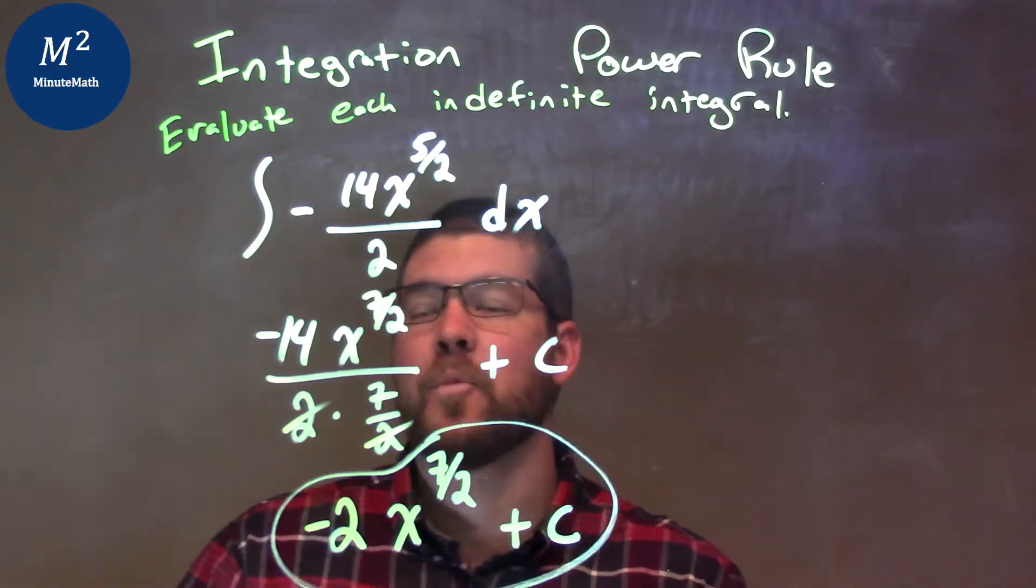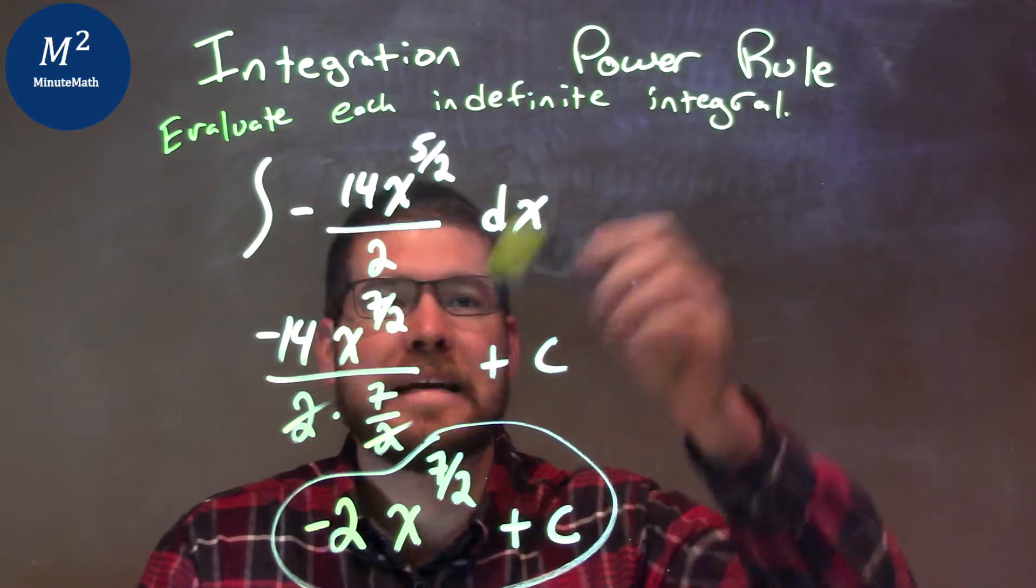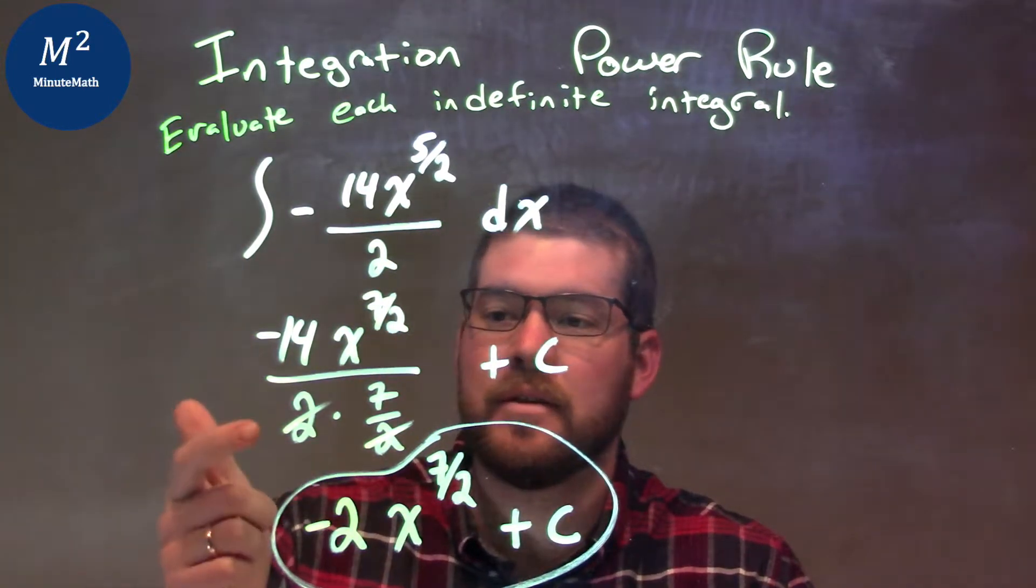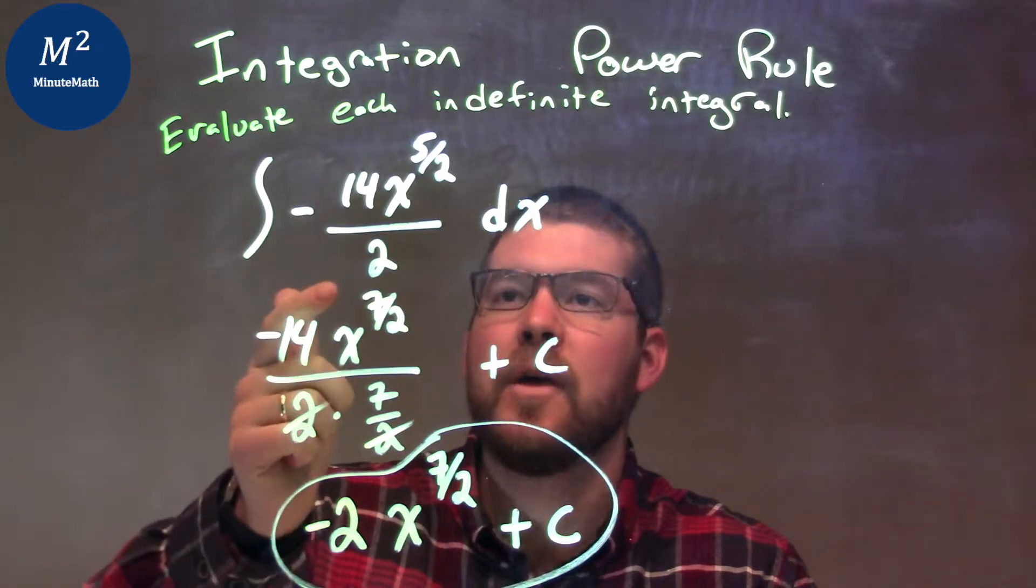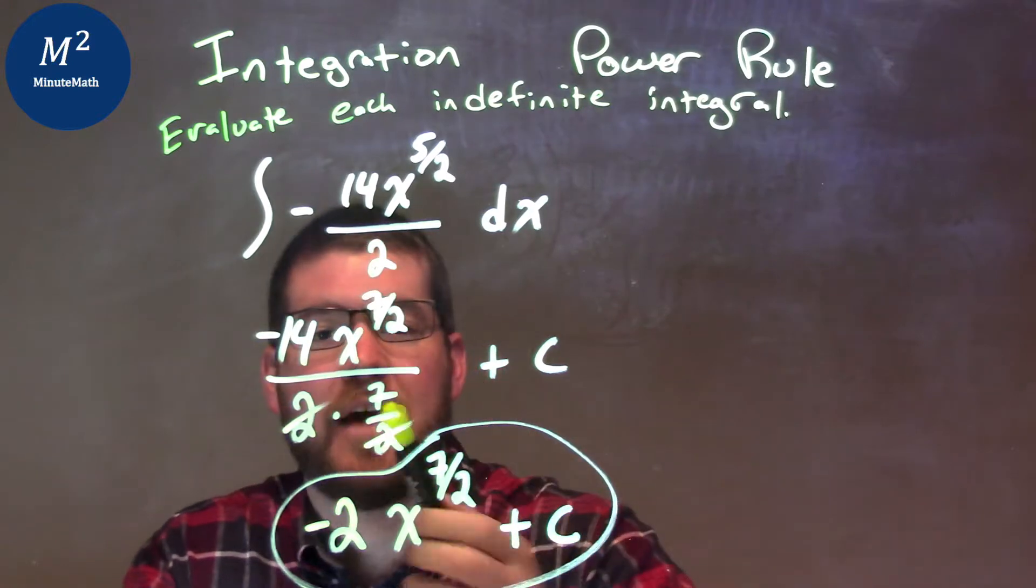So, let's recap. We're given the integral of negative 14x to the 5 halves power divided by 2 dx. Well, same rule still applies. Keep our constants out front. Negative 14 to the 2 in the denominator, x. Raise x by 1. 5 halves plus 1 is 7 halves. And we put that 7 halves in the denominator.